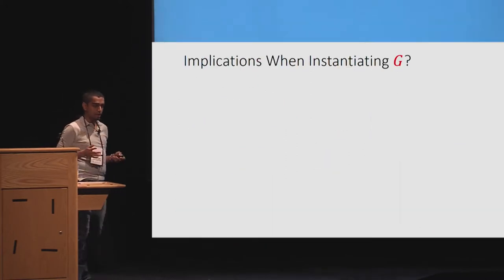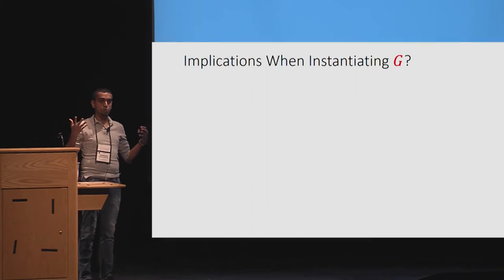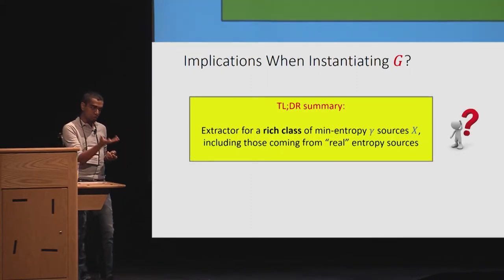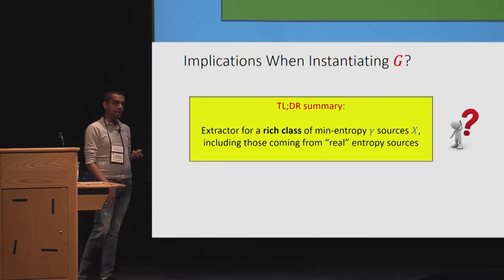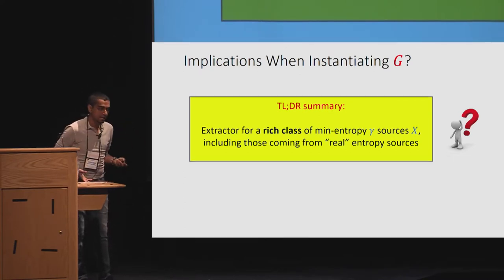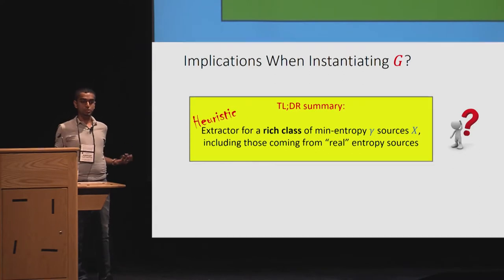The proof follows in a similar intuition as before, where we cannot guess G of X with high probability. So, are we done? What are the implications when instantiating G? When we look at an extractor that we get, it's a rich class of sources, including those coming from real entropy sources. But as we discussed, once we are dealing with it in an idealized setting, it tends to be heuristic.